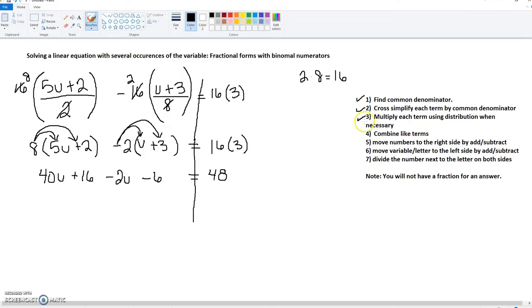And negative 2 times 3 is negative 6, equals 16 times 3 is 48. We have multiplied each term using distribution when necessary.